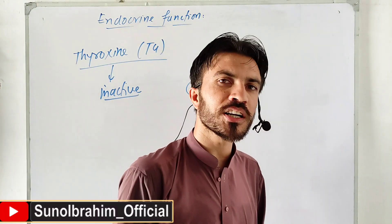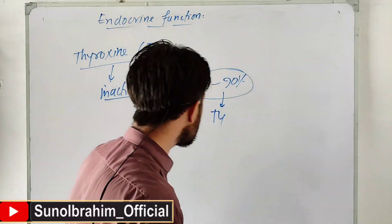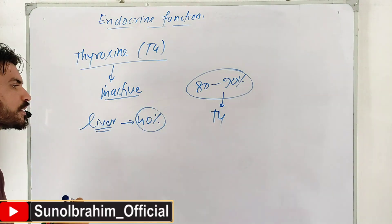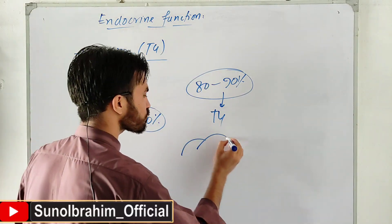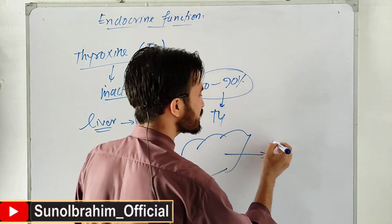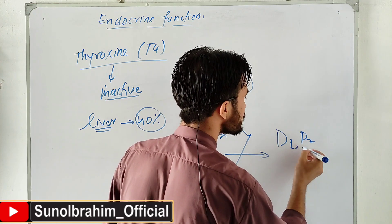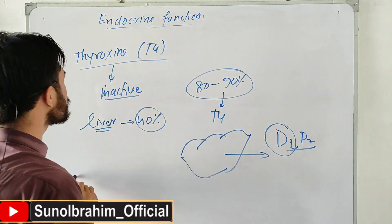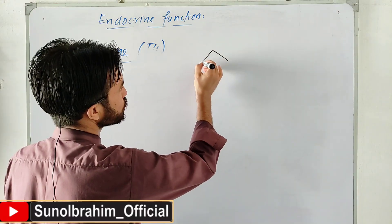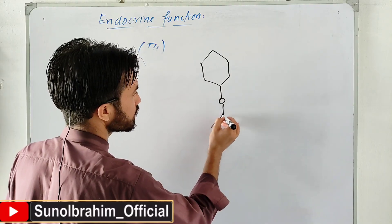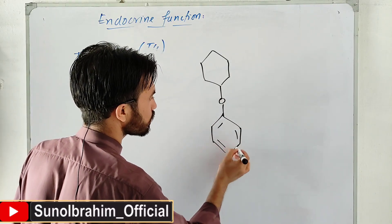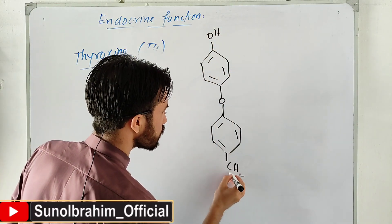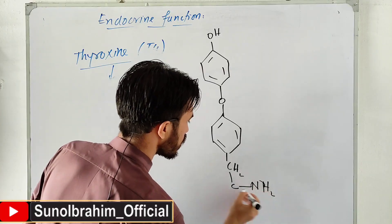T4 needs to be activated, and the liver does this - approximately 40% of T4 activation occurs in the liver. In the liver, enzymes called D1 and D2 deiodinases do this work. D1 is the main enzyme - it removes one iodine from thyroxine. The tyroxine molecule has a benzene ring with double bonds, an OH group, CH2, NH2, and COOH groups.